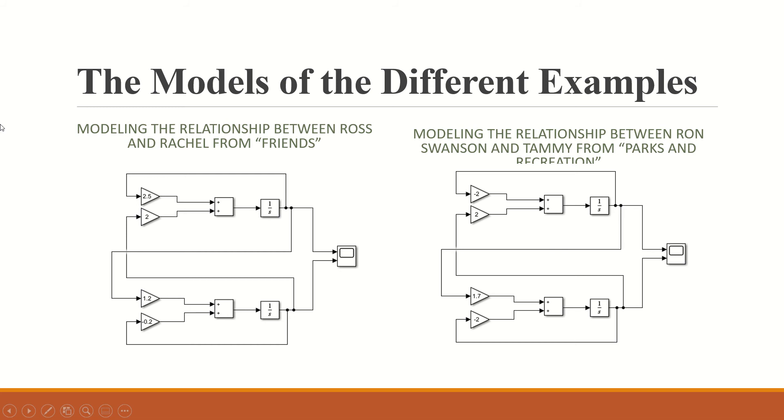These two are examples of the different models of what we could find out from the relationship between two characters. For example, this is what we found for Ross and Rachel which has both positive parameters and then starts with an initial negative. I'll quickly discuss that in the next one.